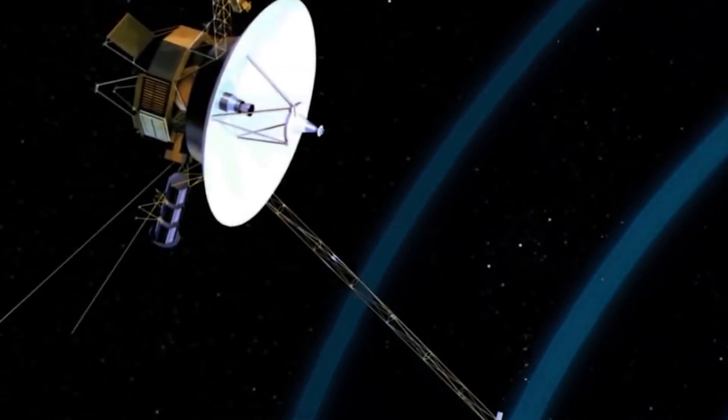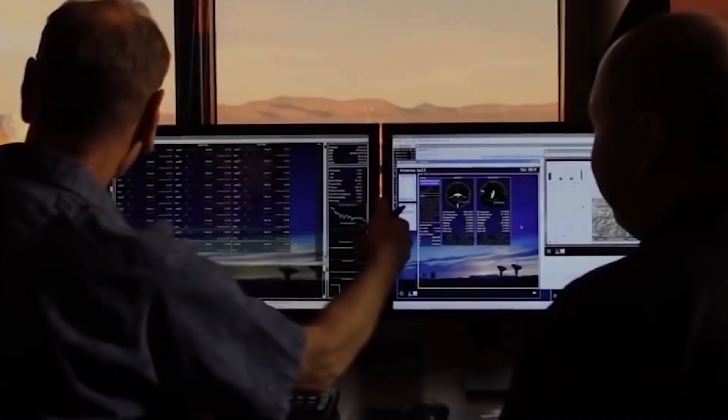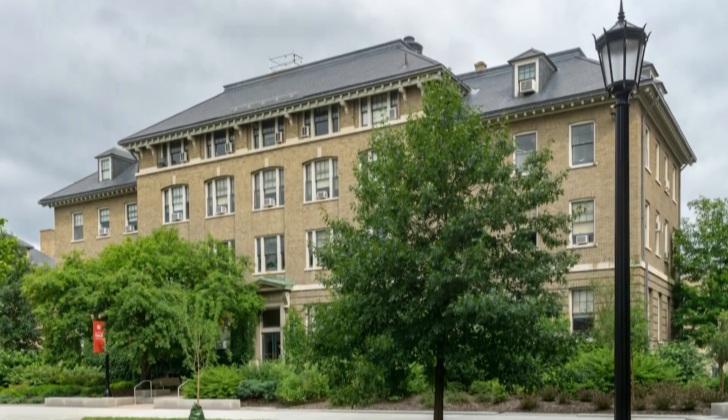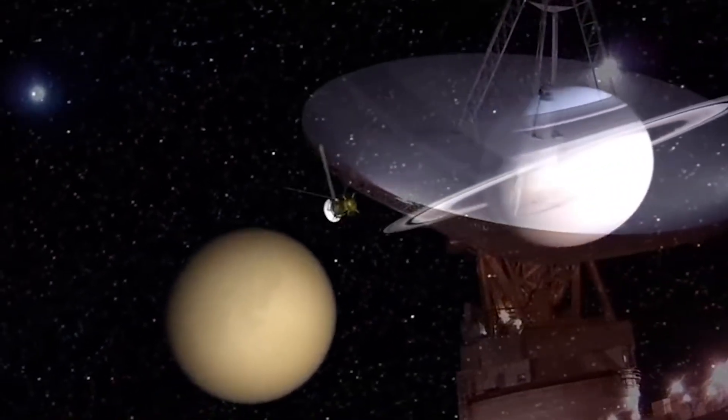What they discovered hiding in plain sight would change everything we thought we knew about space. In 2021, Cornell doctoral student Stella Koch-Ocker was analyzing archived data from Voyager 1's plasma wave system when she noticed something hiding in plain sight.